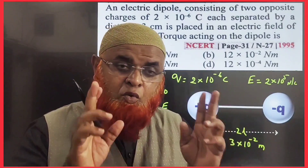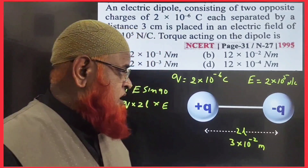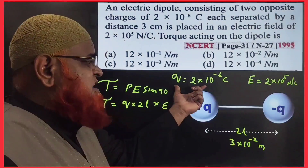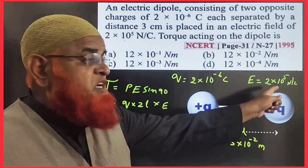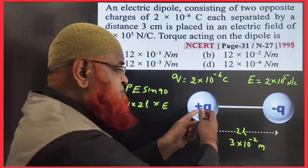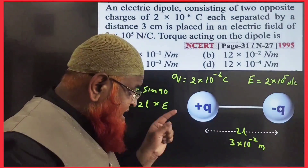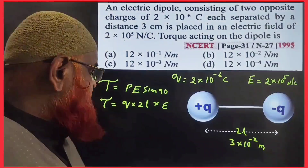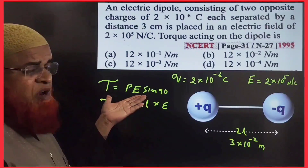Dear students, till now there are two questions asked about torque acting on an electric dipole. Here a positive charge and negative charge are given, kept in an electric field of 2 × 10⁵ newtons per coulomb. The distance between the two charges 2L is directly given as 3 centimeters, which is 3 × 10⁻² meters. The torque acting on electric dipole formula is applied here.